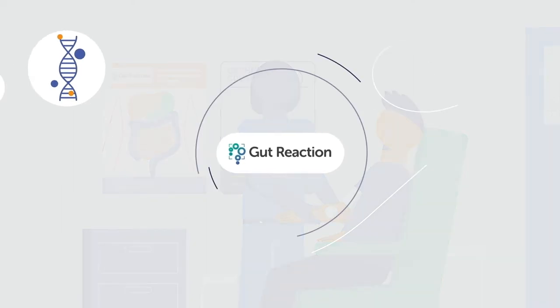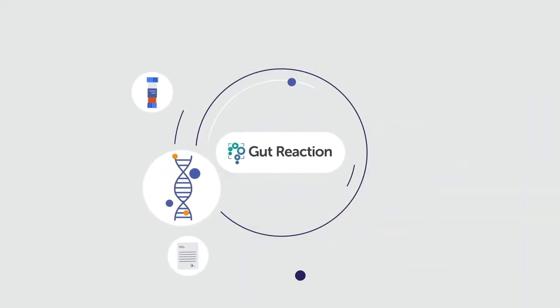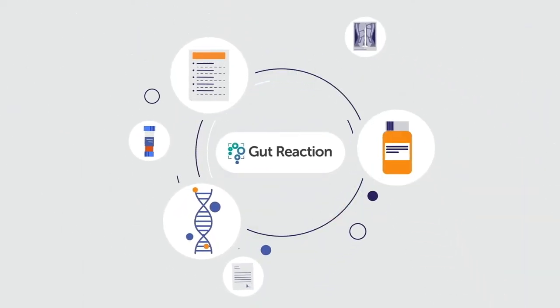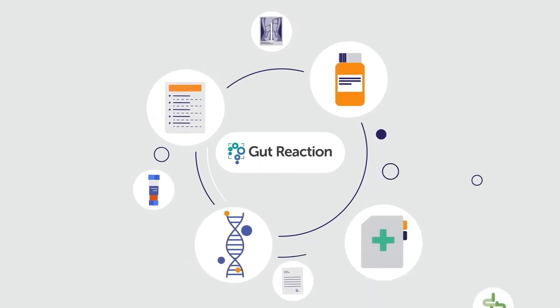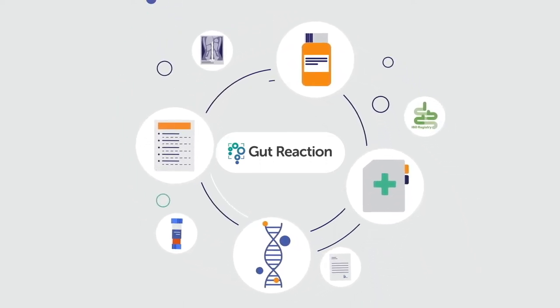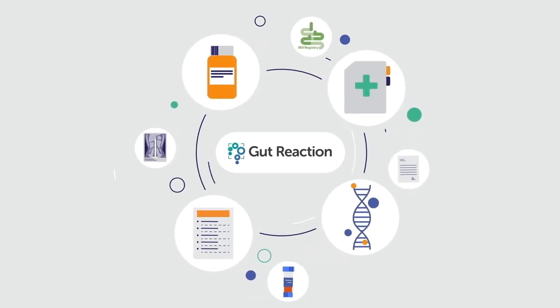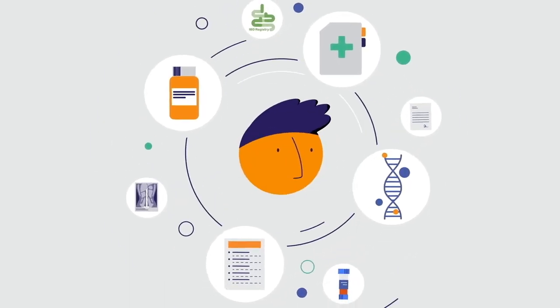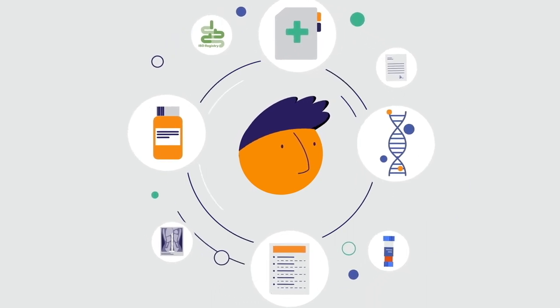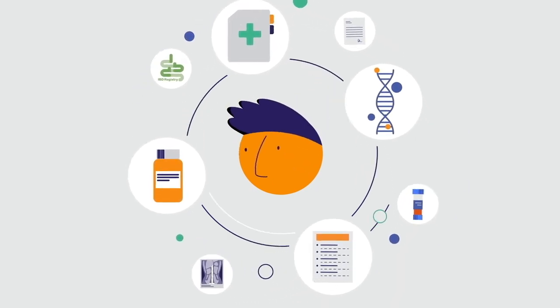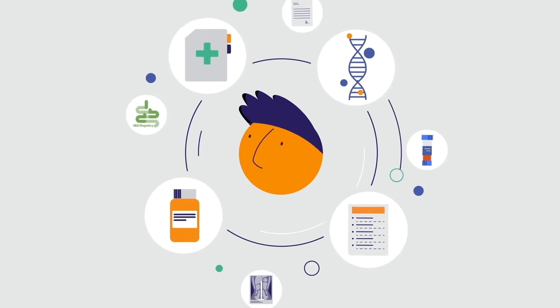Gut Reaction combines the lifestyle and genetic information that Ben provides with data from other sources, like his NHS records and the UK IBD registry. This creates a unique and new opportunity for researchers. The joined-up data in Gut Reaction could help find the causes of Crohn's and colitis, leading to better treatments and improved lives faster.